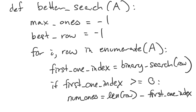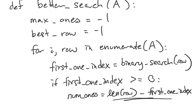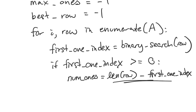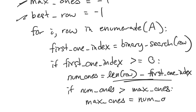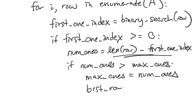If first_one_index is greater than or equal to zero — meaning we actually found a one — then the number of ones equals the length of the row minus first_one_index. You can double-check this formula for off-by-one errors. Then, as before, if num_ones is greater than max_ones, we update max_ones to num_ones and best_row to i. By the end of the loop we have the best row, so we return best_row.